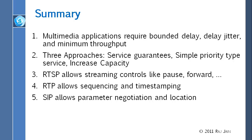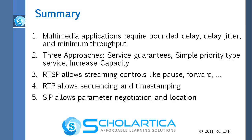That brings us to the end of this module. The five key messages are: multimedia applications require bounded delay, bounded jitter, and minimum throughput. We are getting better multimedia today for two reasons: compression has improved dramatically — we can compress to very low rates while maintaining good quality, such as MPEG-7 at very low rates — and second, networks are getting faster. RTSP allows streaming controls like pause and forward. RTP provides sequencing and timestamping, paired with RTCP for control. SIP enables session and parameter negotiation.